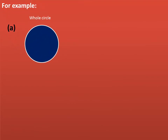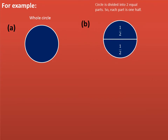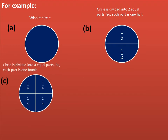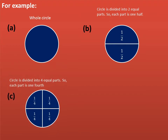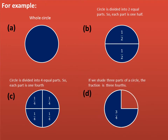Let's see one more example. Number A is a whole circle. Number B, the circle is divided into 2 equal parts, so each part is 1 half. Number C, the circle is divided into 4 equal parts, so each part is 1 fourth. And Number D, if we shared 3 parts of a circle, the fraction is 3 fourths.